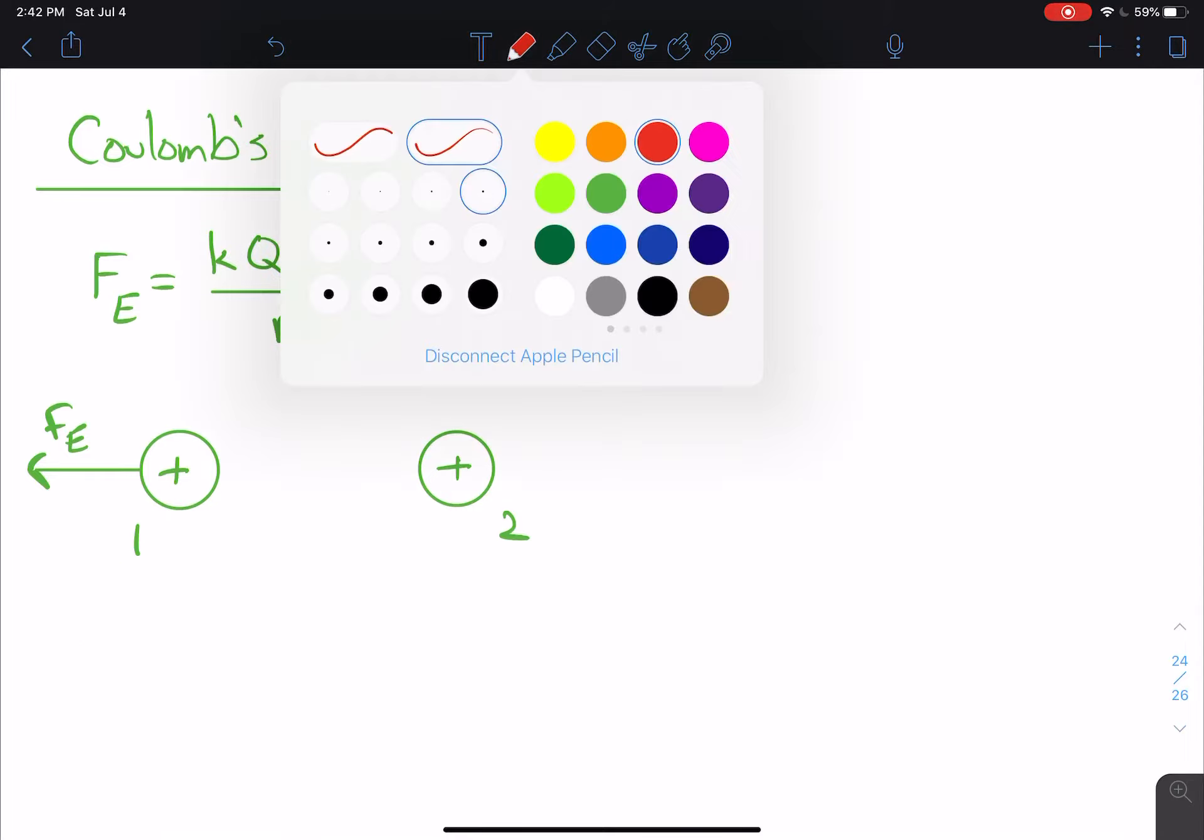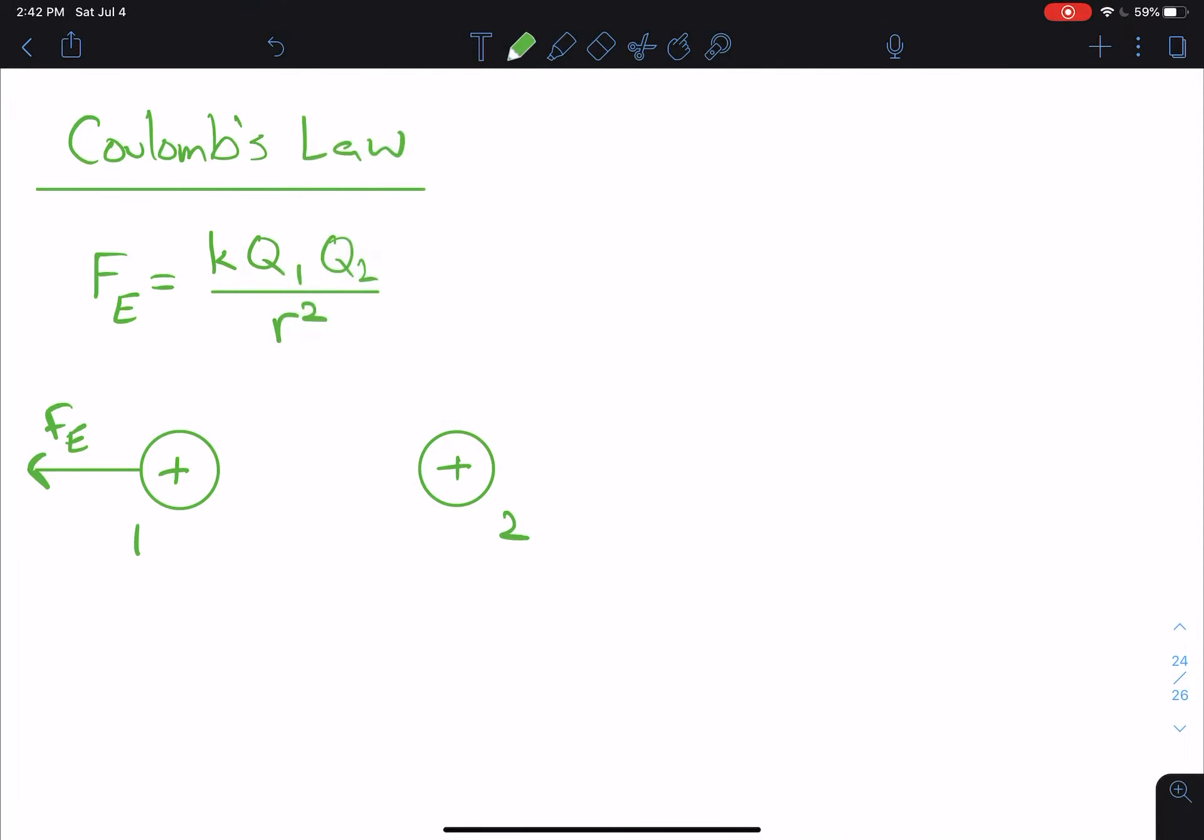And at the same time, 2 is repelled by 1. So, it has to go directly away as well. And that's the electrostatic force on 2. And they're repelling each other because they have the same charge.